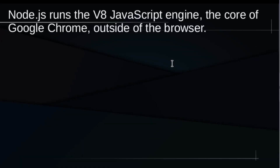Node.js runs the V8 JavaScript engine — the core of Google Chrome — outside the browser. The V8 engine is a set of code assembled to run JavaScript in a browser. Just like a chat app serves the purpose of keeping two friends in contact, the V8 engine serves the purpose of executing JavaScript code in a browser. Let's see that in action.